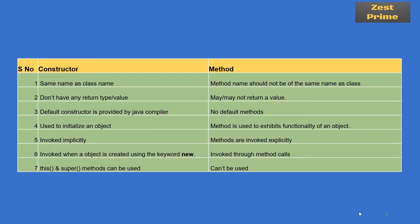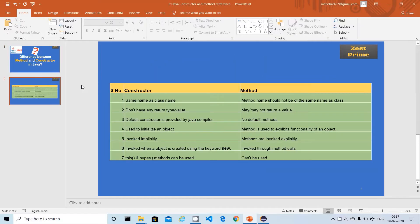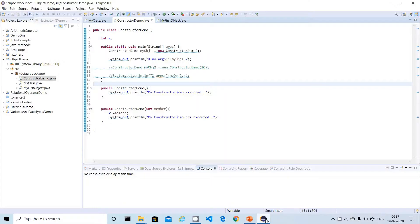Let's jump into the differences and compare them one by one with a Java program. We can see there are seven major differences between the constructor and method in Java. The first difference is that the constructor name is the same as the class name, whereas the method name cannot be the same as the class name — we can give it a different name.